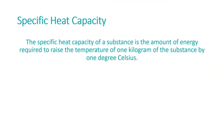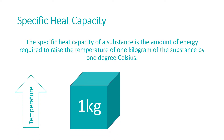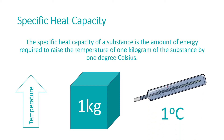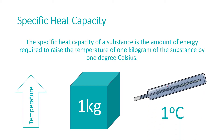Specific heat capacity of a substance is the amount of energy required to raise the temperature of one kilogram of the substance by one degree Celsius. It can be used to work out the change in the thermal energy store of a substance when energy is transferred to it.